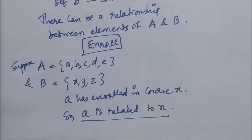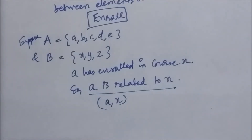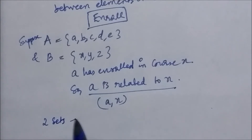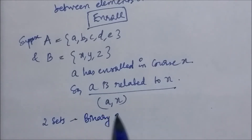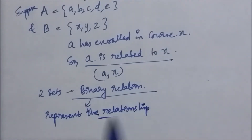The most direct way to express a relationship between elements of two sets is to use ordered pairs made up of two related elements. Here (A, X) is the ordered pair, meaning that A is related to X. When there are two sets involved in the relationship, we call such a relation a binary relation. A binary relation represents the relationship between elements of two sets.